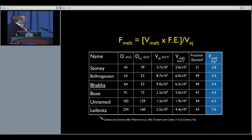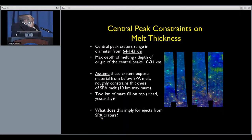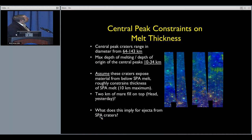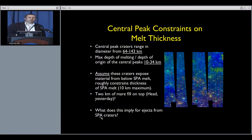Using the scaling equations and the central peaks, we can begin to place or at least constrain the thickness of a possible melt sheet within the center of SPA. We have those four craters. They range in size from 64 to 143 kilometers in diameter. The maximum depth of melting for those craters or the depth of origin for the central peaks ranges from 10 to 34 kilometers. If we assume that that smallest size, 10 kilometer depth for a central peak, constrains the thickness of an impact melt, that the material exposed in those central peaks is coming from below the impact melt. Assuming those craters expose material from below the melt, we can assume that there's about 10 kilometer thick of melt on the floor of SPA, at least in the center portion around the Baba crater.